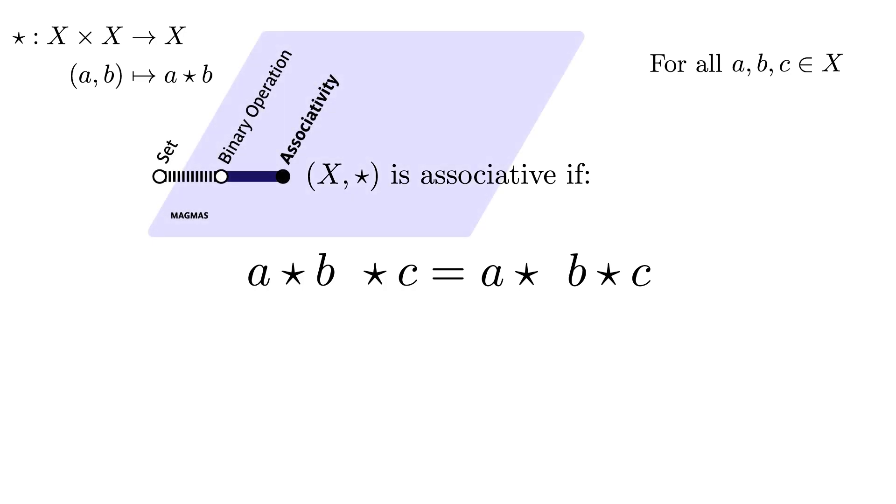To rephrase what we've done so far: for our magma to also be a semi-group, we need the binary operation to also be associative.